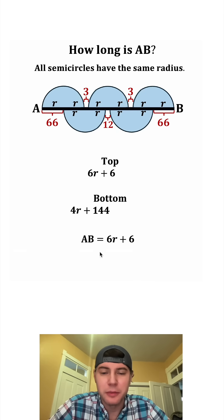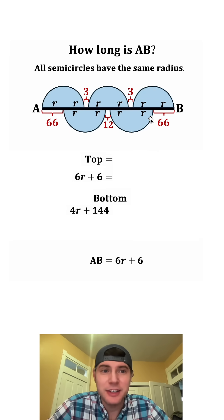And then once we solve for R, we'll be able to find AB. And the way we're going to solve for R is this top has to equal the bottom. So that means that 6R plus 6 has to equal 4R plus 144. And now we have a nice equation. Let's solve for R.